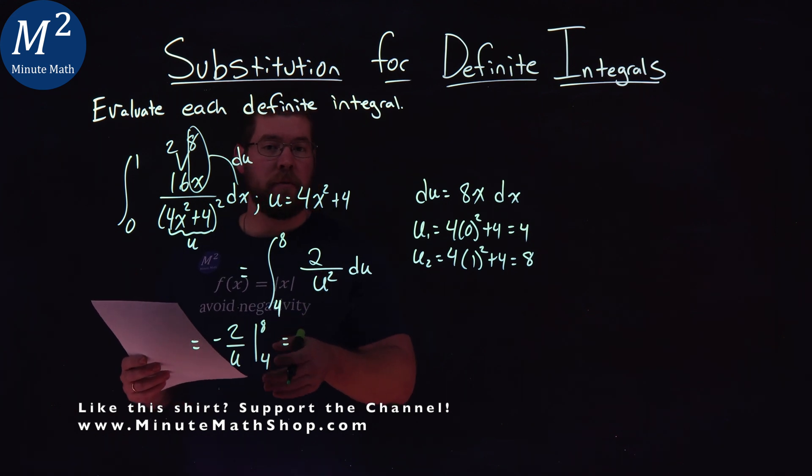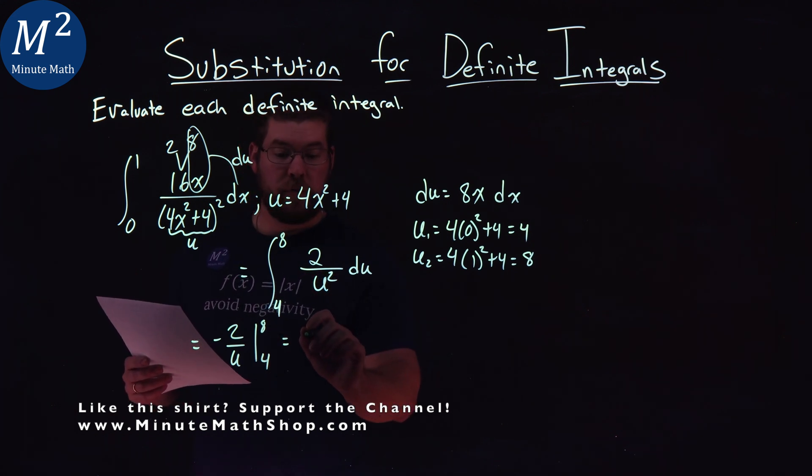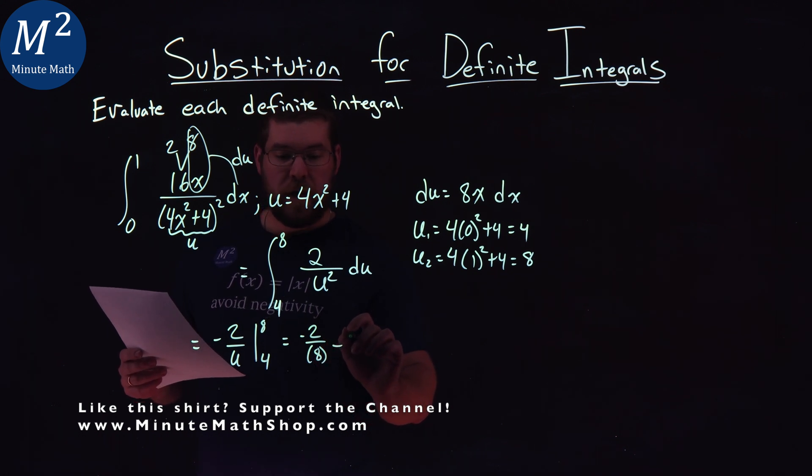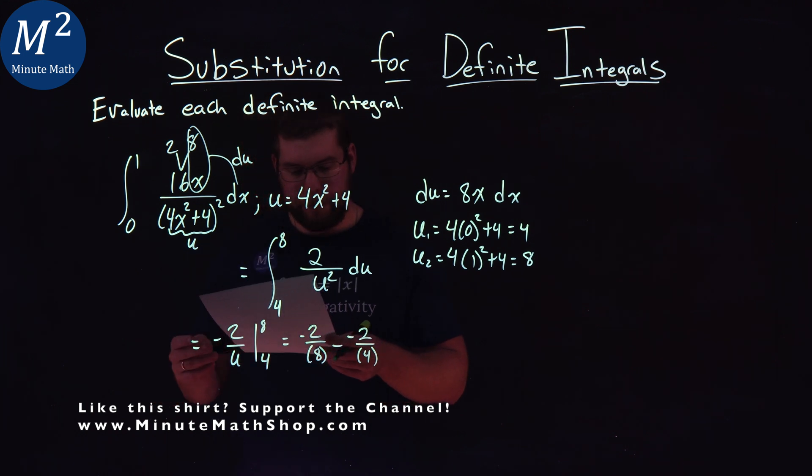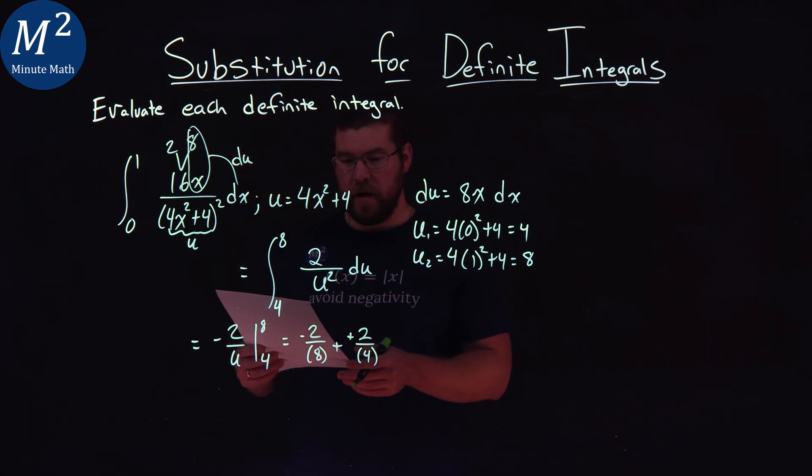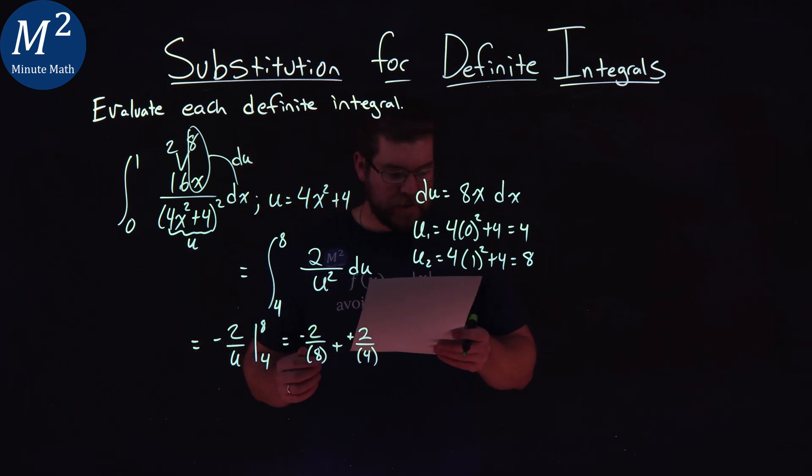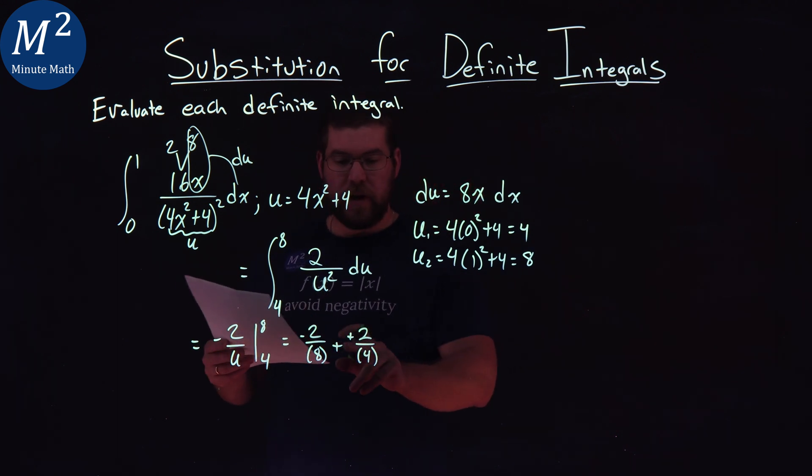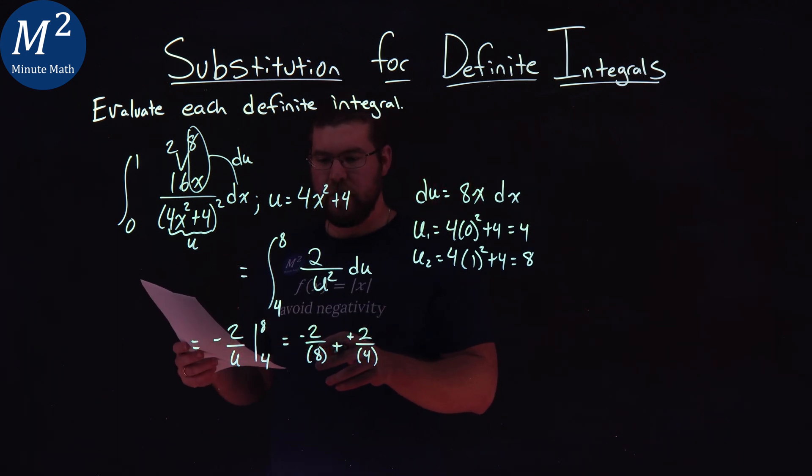So we plug in our 8 value for u and our 4 value for u and subtract them. So negative 2 over 8 minus a negative 2 over 4. Now remember that's plus a positive here, right? So we have negative 2 over 8 plus 2 over 4.